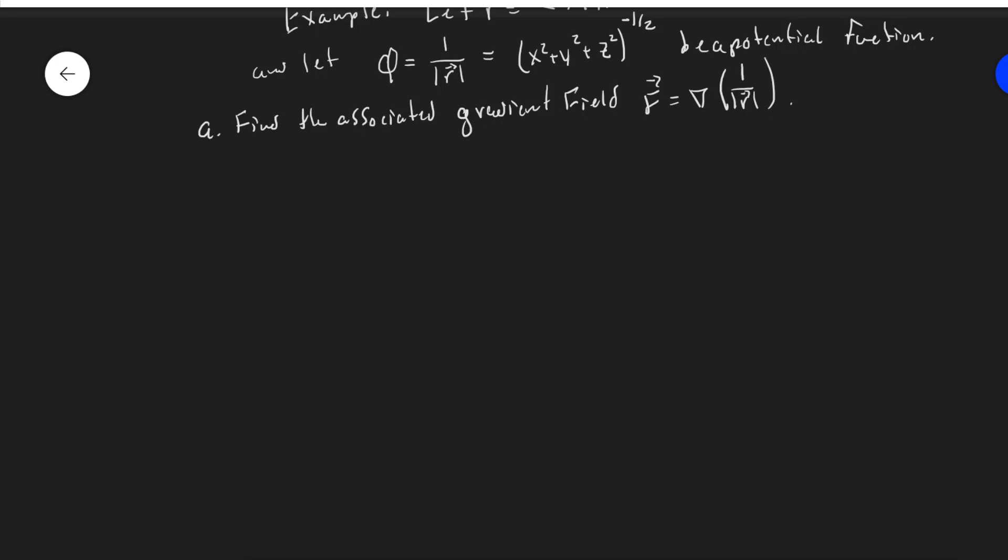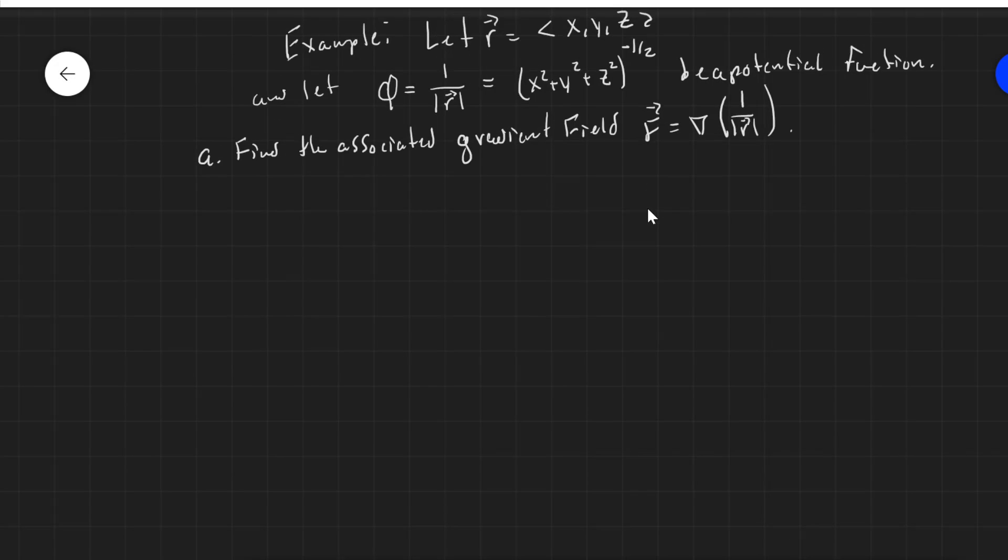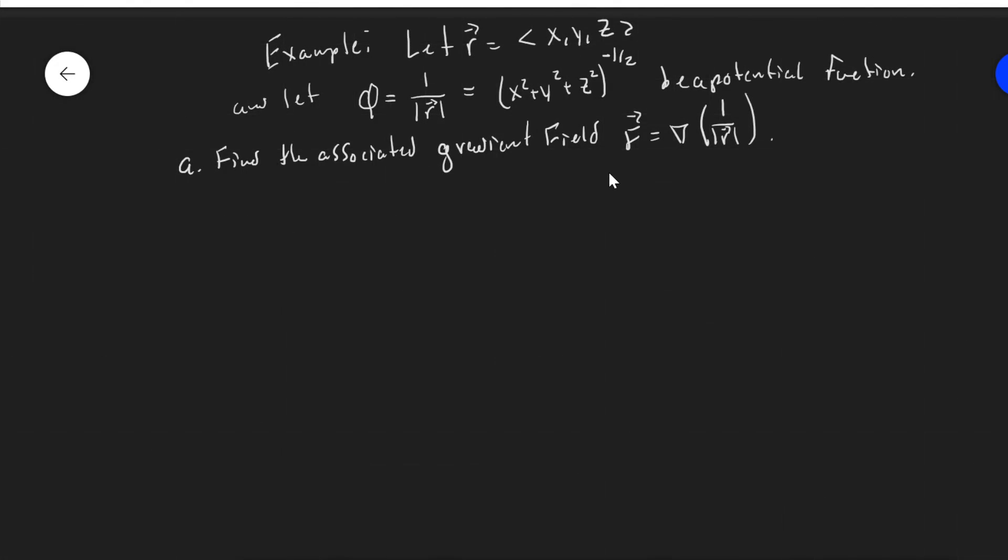All right, so I know I said the last video was the last video, but I figured we need one more example to really drive home these properties of divergence and curl. So we'll work through this example here dealing with the vector field with the vector R given as x, y, z, and phi given as 1 over the magnitude of R.